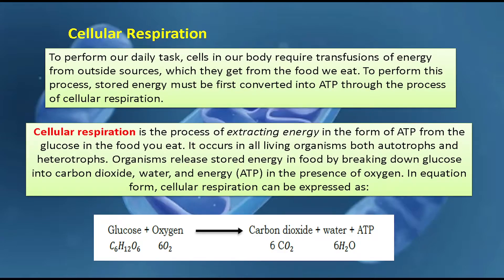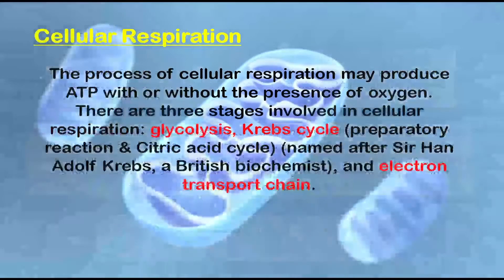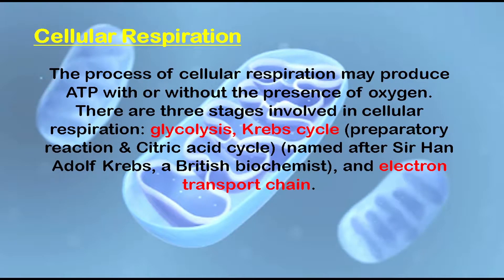In equation form, cellular respiration can be expressed as: glucose plus oxygen produces carbon dioxide, water, and ATP. The process of cellular respiration can produce ATP with or without the presence of oxygen. There are three stages involved: glycolysis, the preparatory reaction, and the citric acid cycle.